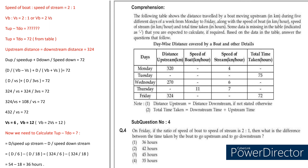Coming to the fourth question on Friday: if the ratio of speed of boat to speed of stream is 2:1, the equation becomes VB equals 2·VS. They ask for the difference between time taken to go upstream and downstream, which is T_upstream minus T_downstream. From the table on Friday, the distance upstream is 324 and the total time gives T_upstream plus T_downstream equals 72.